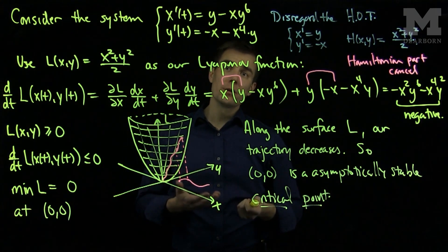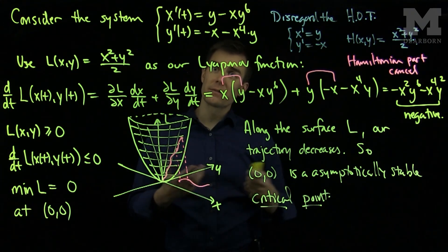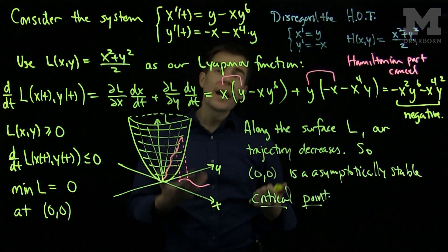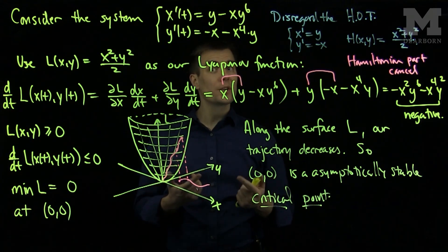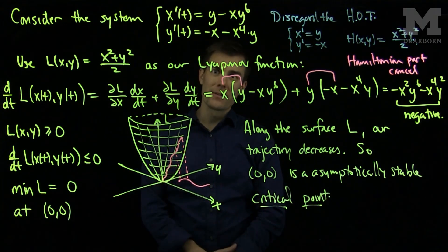So, in conclusion, we can use what would be the Hamiltonian for a system that's non-linear of high order to construct a potential Lyapunov function. Notice that the signs have to be in the correct configuration in order for the derivative to be decreasing. Thank you very much.